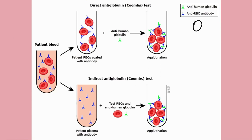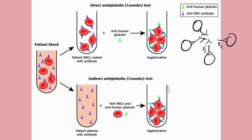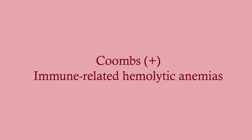In the direct Coombs test, if red blood cells have antibodies attached to them, you add an anti-IgG antibody directed against the Fc portion of those antibodies. Because IgG is multimeric, it attaches to antibodies on multiple red blood cells, causing agglutination. Agglutination indicates antibodies on the red blood cells — an autoimmune hemolytic anemia. With non-autoimmune causes like hereditary spherocytosis or G6PD deficiency, there are no antibodies, so the Coombs test is negative.